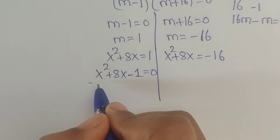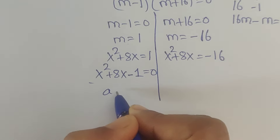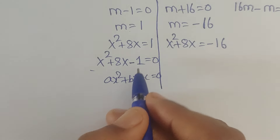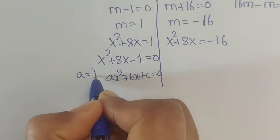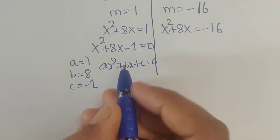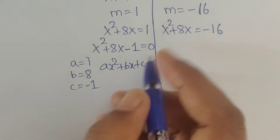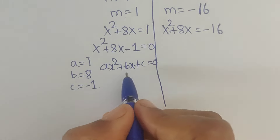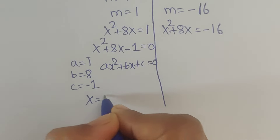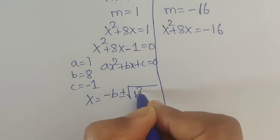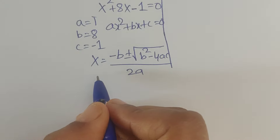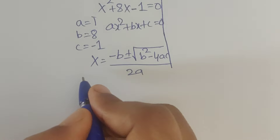This is a quadratic equation. Comparing with the standard form ax squared plus bx plus c equals 0, we get a equals 1, b equals 8, c equals minus 1. Applying the quadratic formula: x equals minus b plus or minus square root of (b squared minus 4ac) divided by 2a.